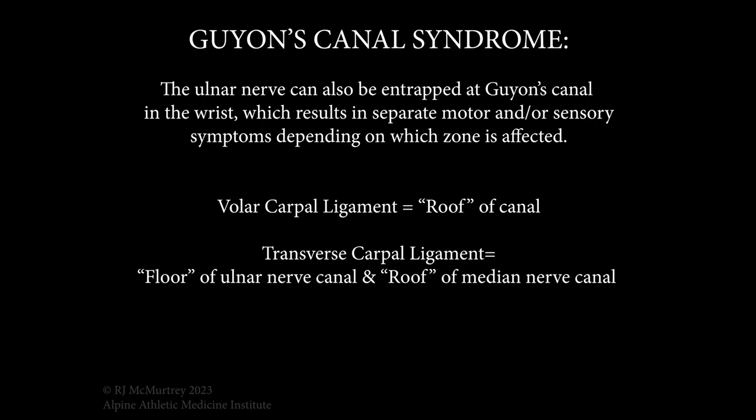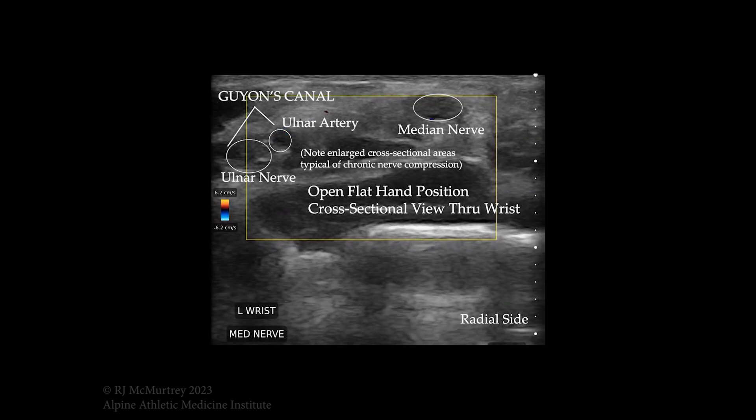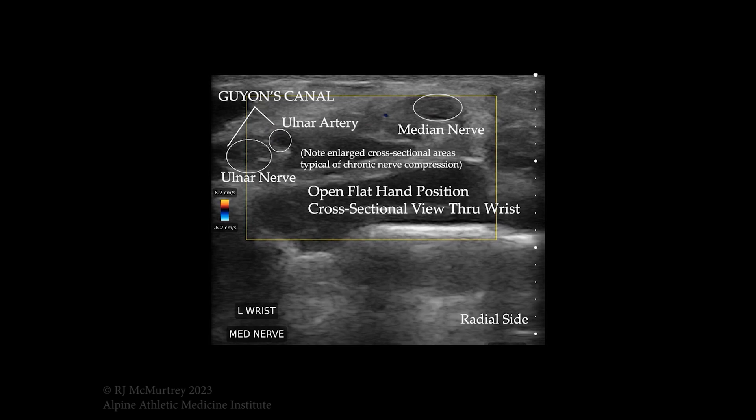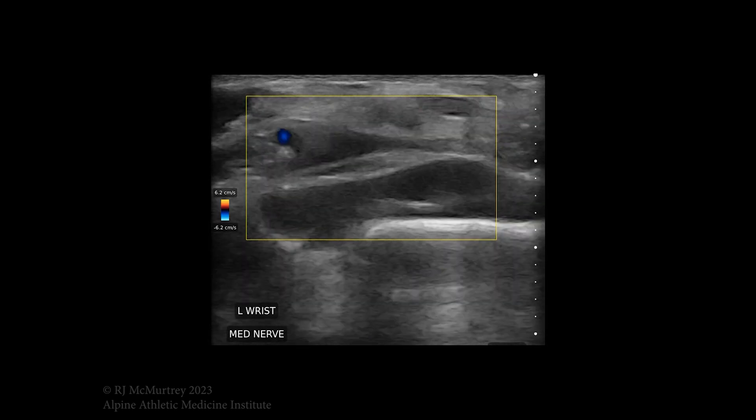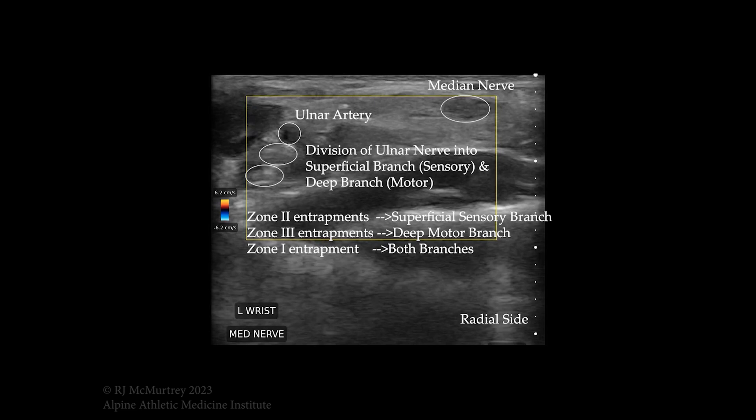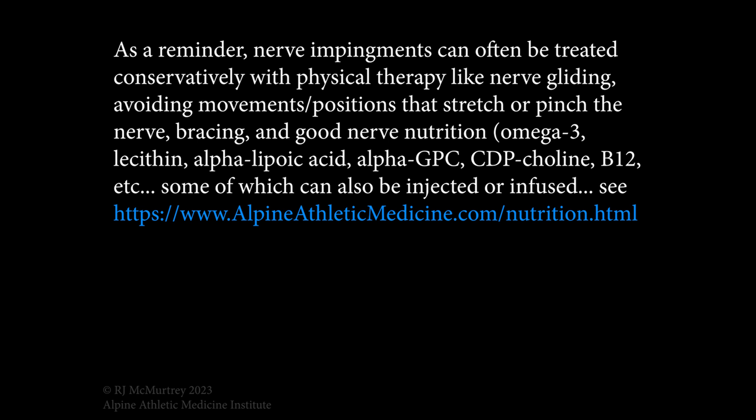To finish up, the last common site of ulnar nerve entrapment is Guyon's canal at the wrist, covered by the volar carpal ligament as its roof, with the transverse carpal ligament forming the floor. You can see on this image the ulnar nerve passing through Guyon's canal with the ulnar artery. Importantly, you can get many different types of symptoms depending on where exactly the entrapment is within the canal, because the ulnar nerve starts branching into motor branches for the intrinsic hand muscles and into sensory branches. In zone one, both motor and sensory are impaired; in zone two, only sensory is lost; and in zone three, only motor is lost.